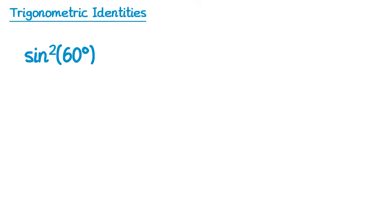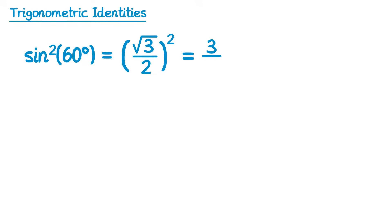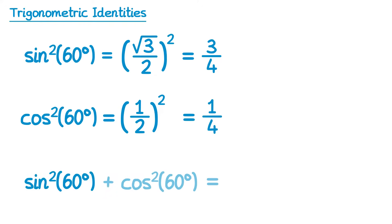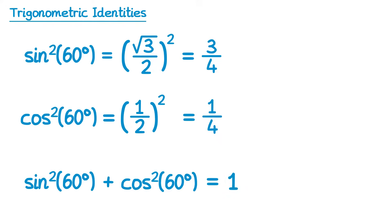What about sine of 60 squared — sine squared 60? That's square root 3 over 2, squared. Squaring the square root 3 gives 3, and squaring 2 gives 4, so sine squared 60 is 3 quarters. Cos squared 60: cos of 60 is one half, so one half squared is one quarter. Adding sine squared 60 and cos squared 60 gives 3 quarters plus 1 quarter, which is 4 quarters, or 1.